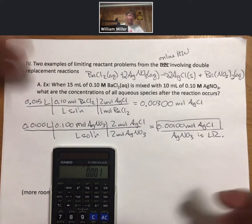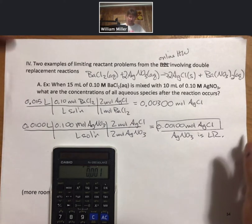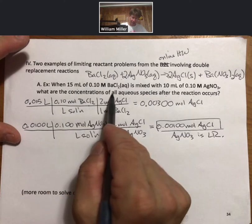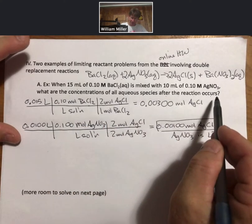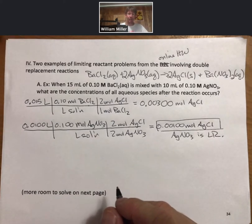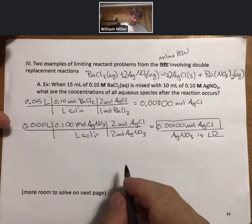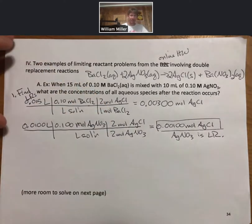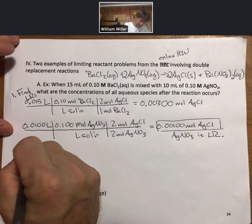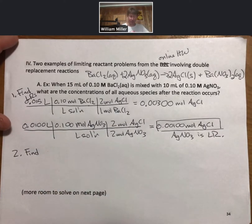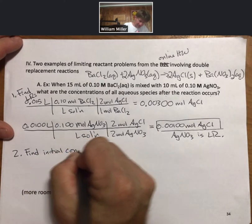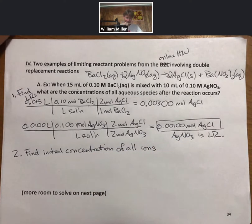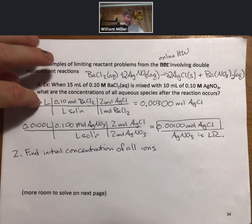So what have we learned so far? We've learned that the amount of silver chloride we can make is determined by the limiting reactant calculation, and silver nitrate is our limiting reactant. We're not done with the problem, but that's a good start. The next step is to reassess what we've been asked: what are the concentrations of all aqueous species after the reaction occurs? Now this is where the problem becomes new and different. Let's call this step one: find limiting reactant — done. Step two: find initial moles of all ions.